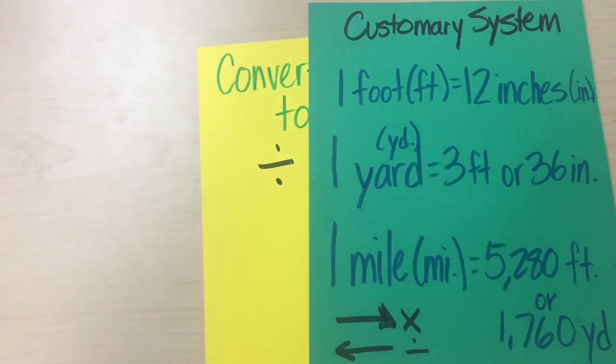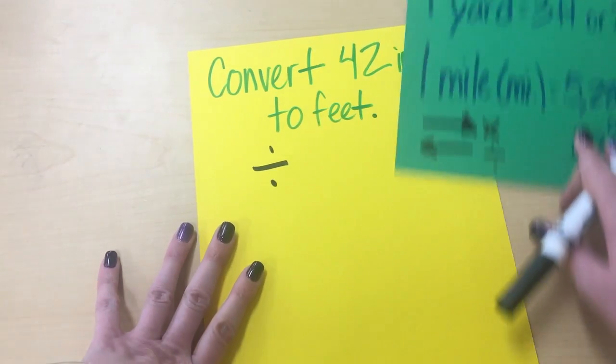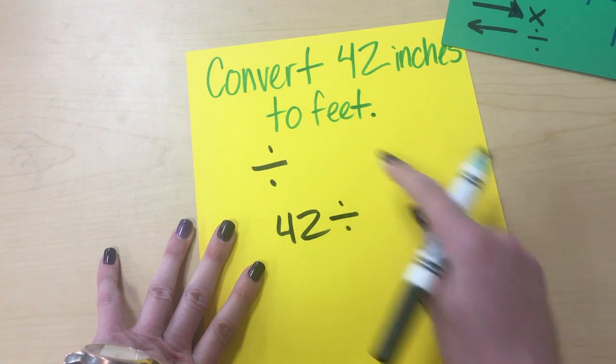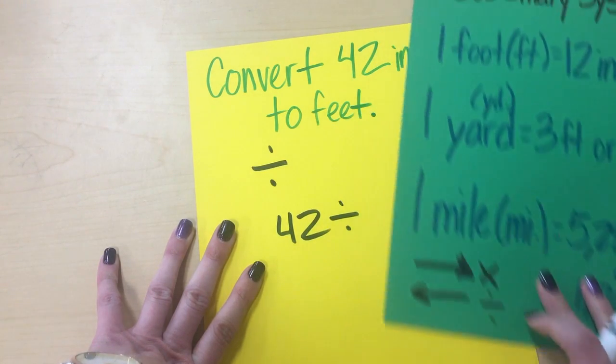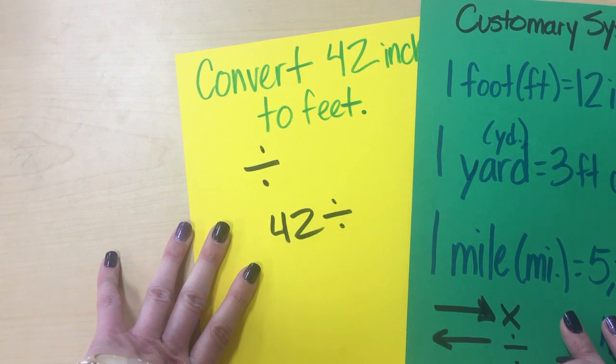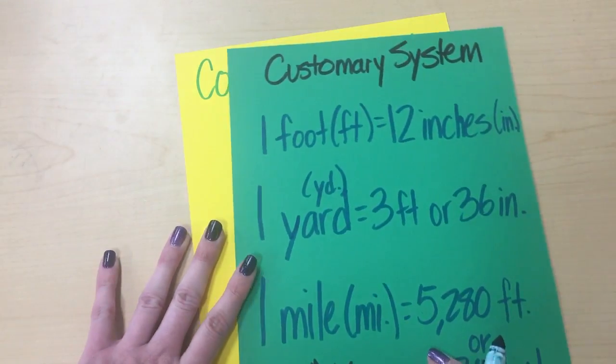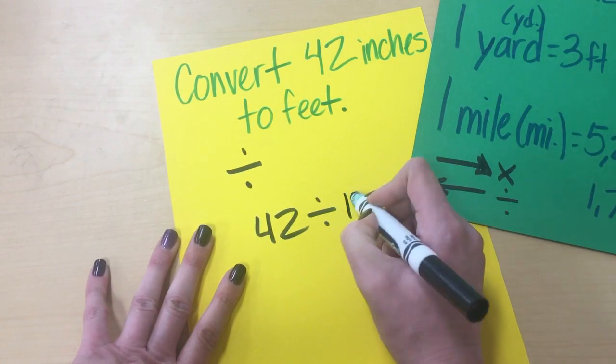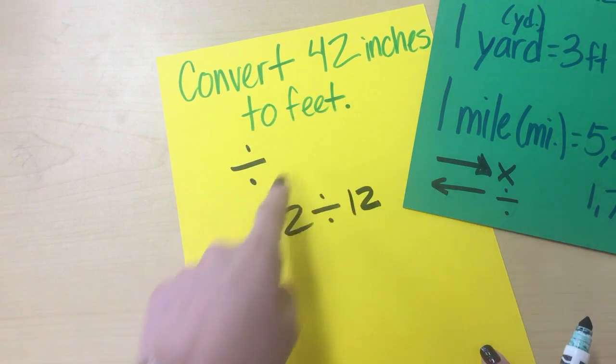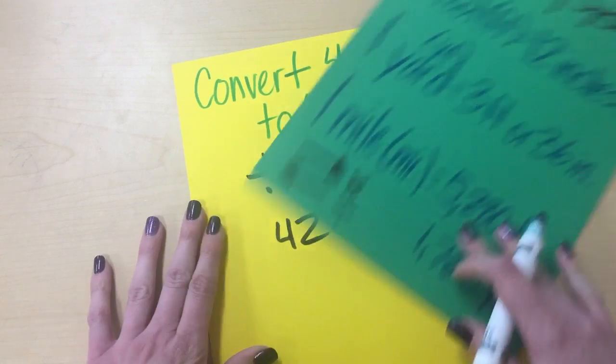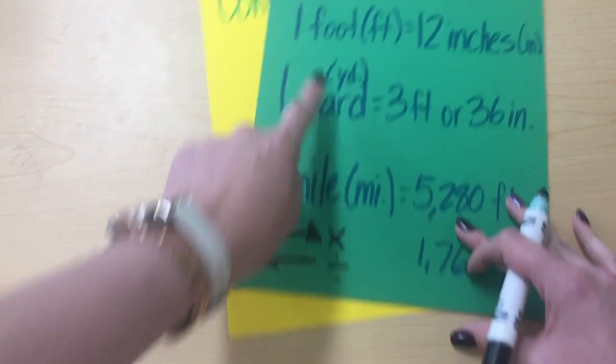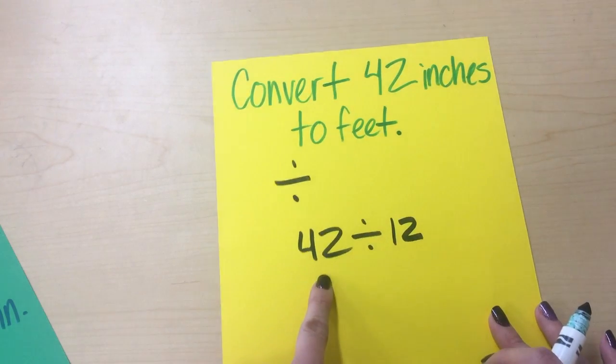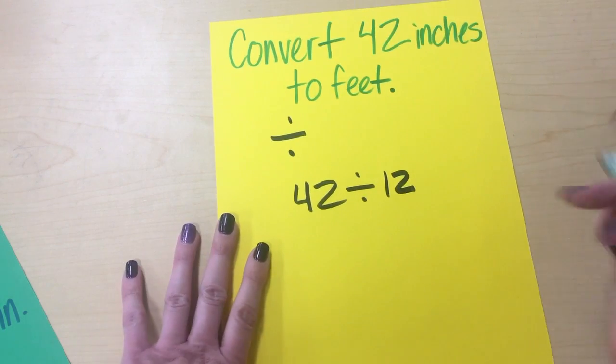Now we have to decide what two numbers are we dividing. We're taking 42 and we're going to divide it into feet. So let's see. How many inches are in a foot? 12 inches in a foot. So we're dividing this by 12 because we're trying to put inches to feet, inches to feet. So we're dividing by 12. This is what we start with, divided by 12.